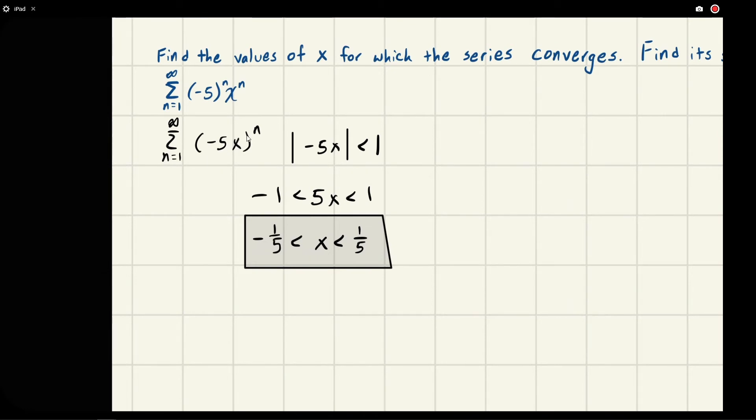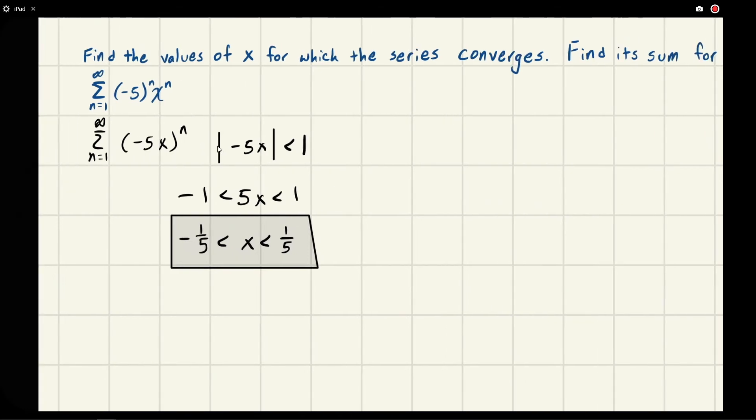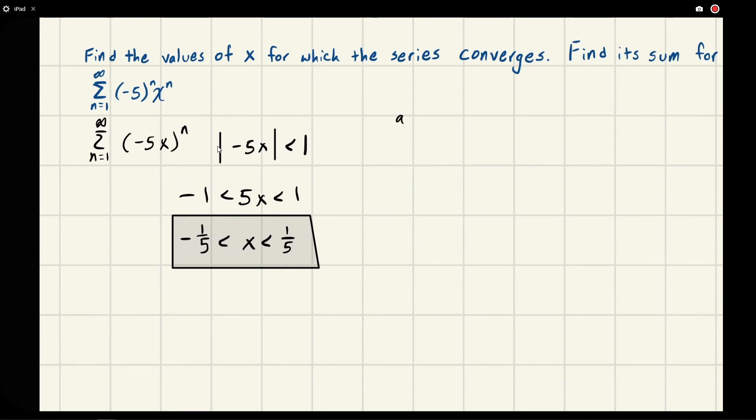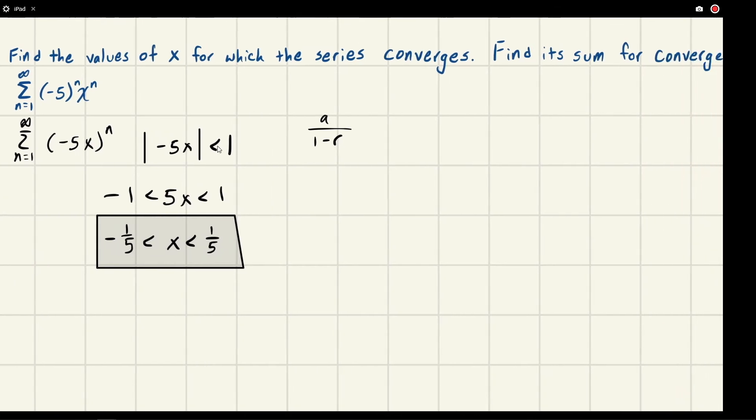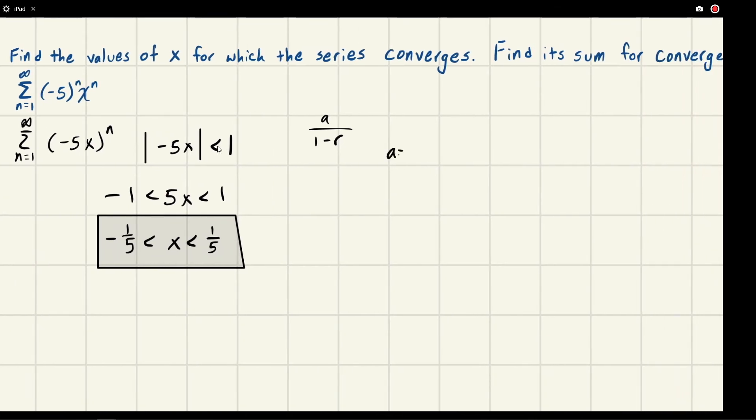We know it's a geometric series, so we know the sum is a over 1 minus r. So we just need to figure out what a and r are. a is just the first term. When n is 1, this becomes a 1, and so we're left with -5x. So that would be a. r is the common ratio and we already know that because it's already inside what n is, so that's also -5x.